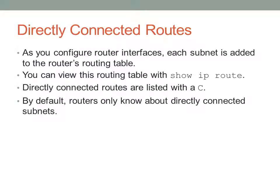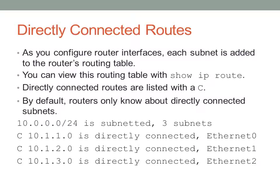By default, routers only know about directly connected subnets. They're not going to know about anything else unless you tell them or unless you set up a routing protocol of some sort. On this router, you can see that I've configured three directly connected subnets: 10.1.1, 10.1.2, and 10.1.3. This is the sort of output you would see in a show IP route.